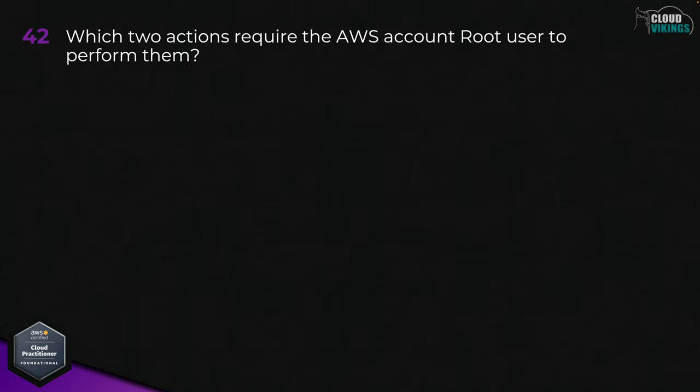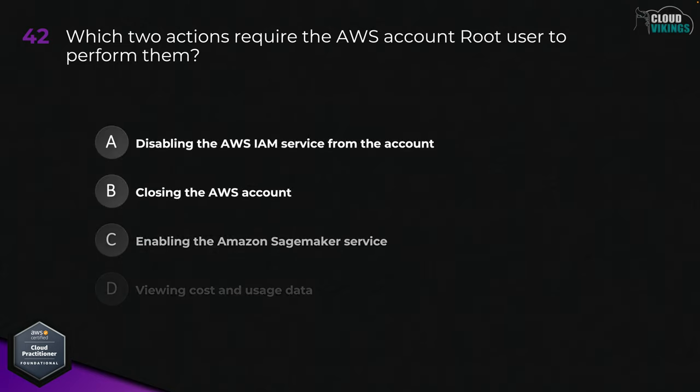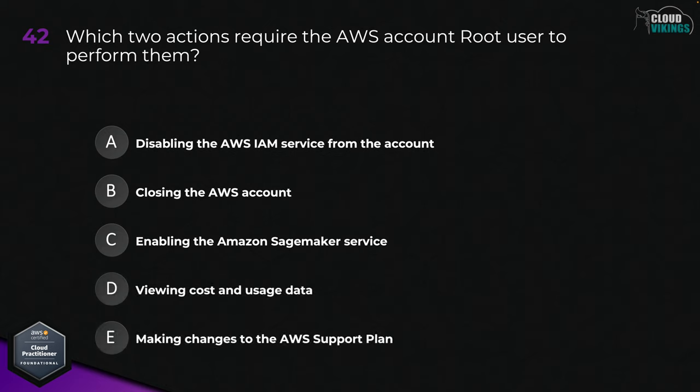Question forty-two: which two actions require the AWS account root user to perform them? Options are: A, disabling the AWS IAM service from the account; B, closing the AWS account; C, enabling the Amazon SageMaker service; D, viewing cost and usage data; or E, making changes to the AWS support plan. The two correct answers are B, closing the AWS account, and E, making changes to the AWS support plan.